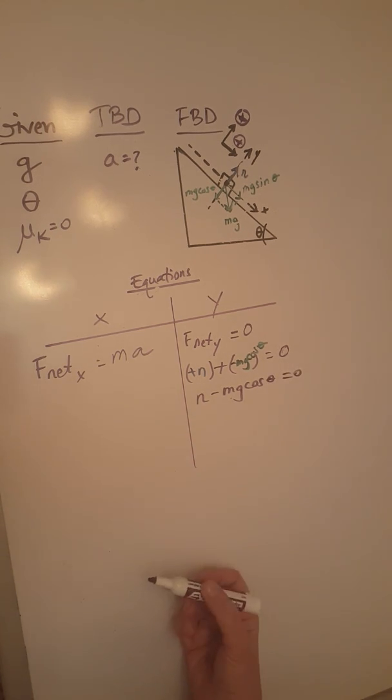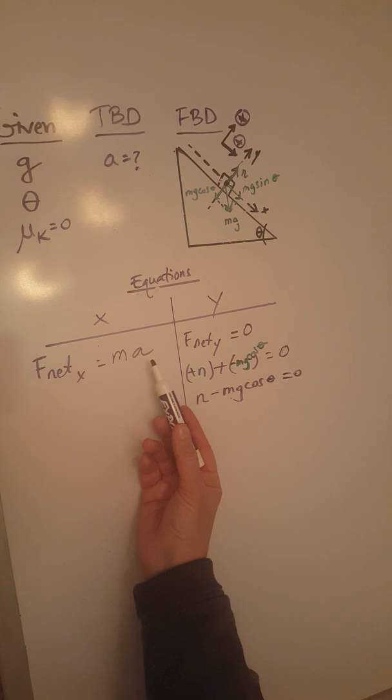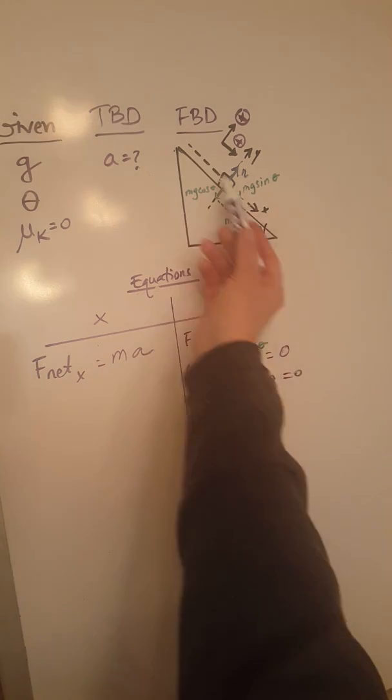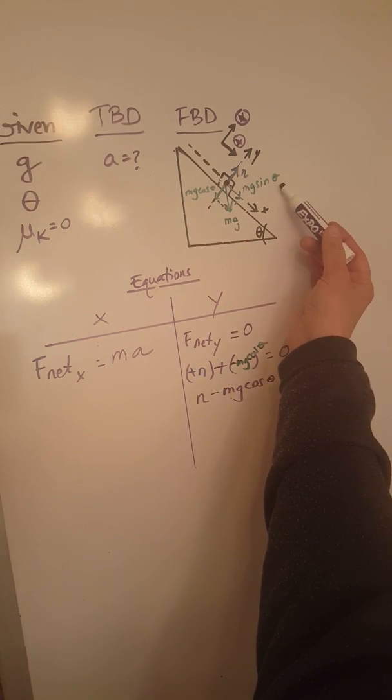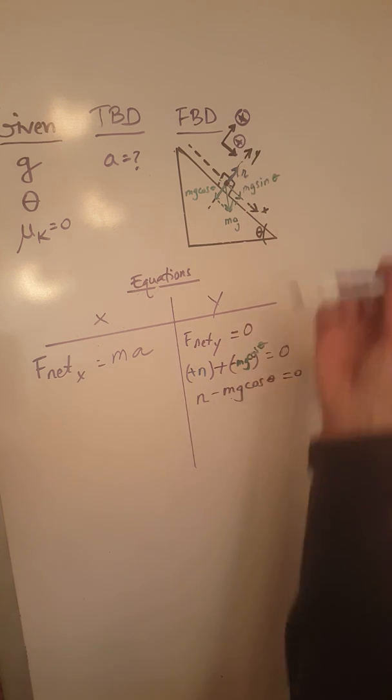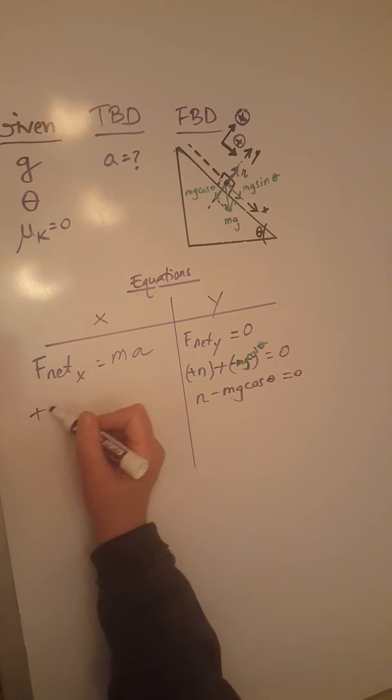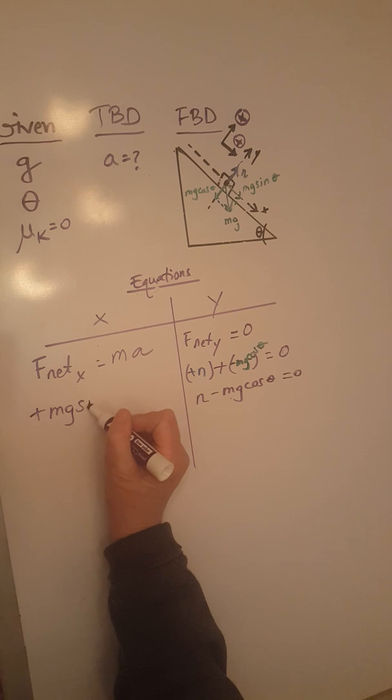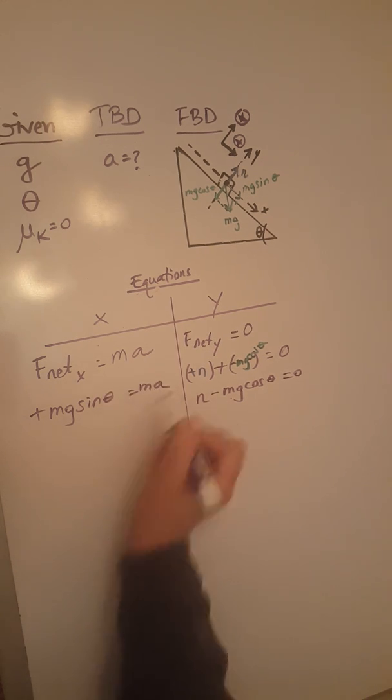For the x equation, we have F net x equals m times a. But on the x, we only have one force mg sine theta and is positive, so therefore we have positive mg sine theta equals m a.